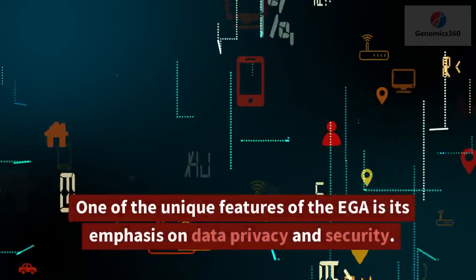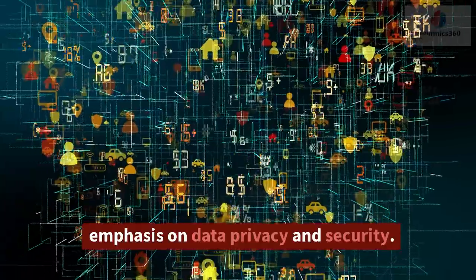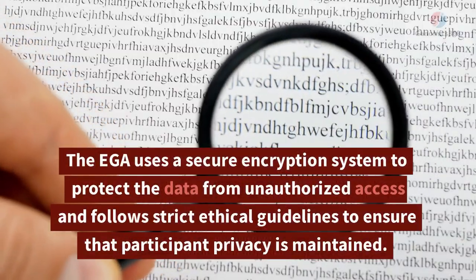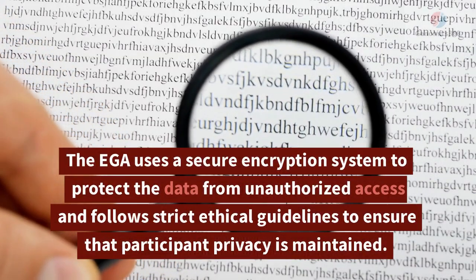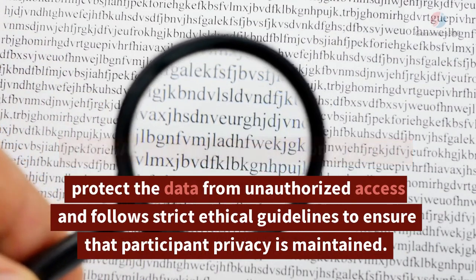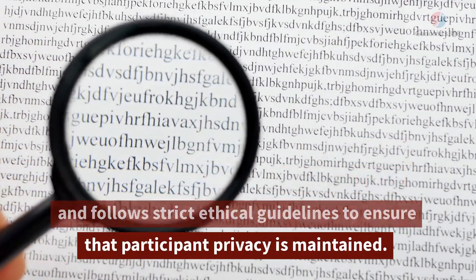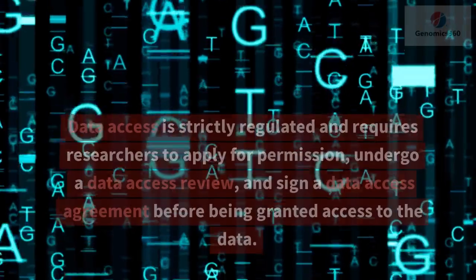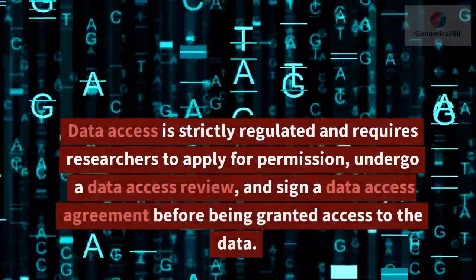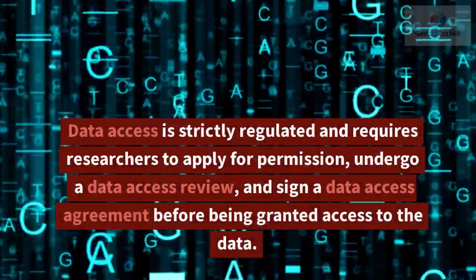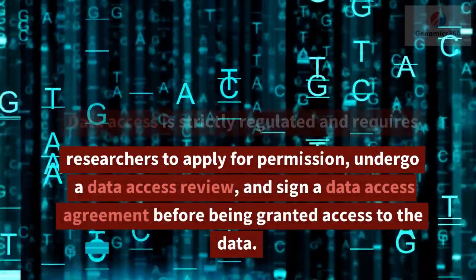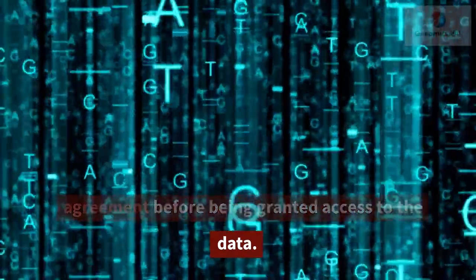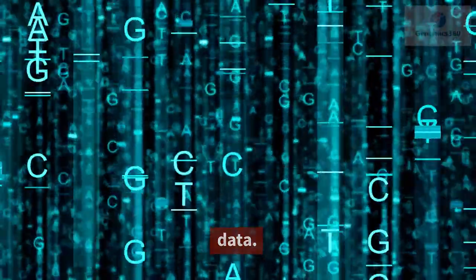One of the unique features of the EGA is its emphasis on data privacy and security. The EGA uses a secure encryption system to protect the data from unauthorized access and follows strict ethical guidelines to ensure that participant privacy is maintained. Data access is strictly regulated and requires researchers to apply for permission, undergo a data access review, and sign a data access agreement before being granted access.